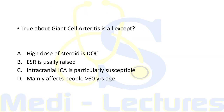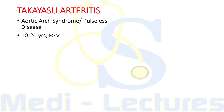Practice question: 'True about Giant Cell Arteritis — all except?' High dose steroid is drug of choice — true. ESR is usually raised — true. Intracranial internal carotid artery is particularly susceptible — false, as external carotid artery is most commonly involved. Mainly affects people more than 60 years — true. The correct option is C.